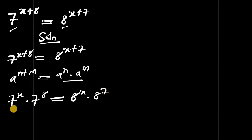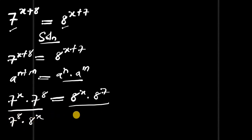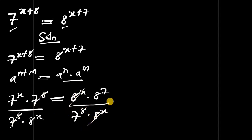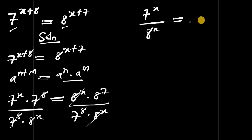We can divide both sides of this equation by 7 power 8 times 8 power x. 7 power 8 will cancel with 7 power 8 here, and 8 power x will cancel with 8 power x here. So we're going to have 7 power x divided by 8 power x equals 8 power 7 divided by 7 power 8.